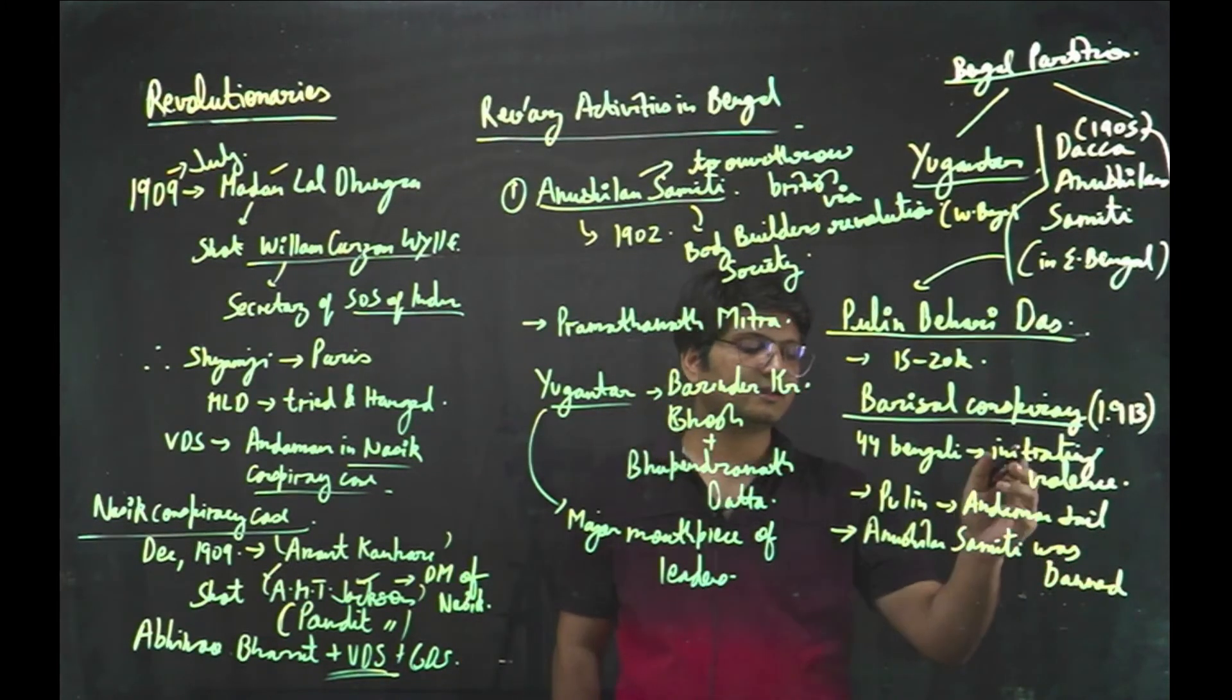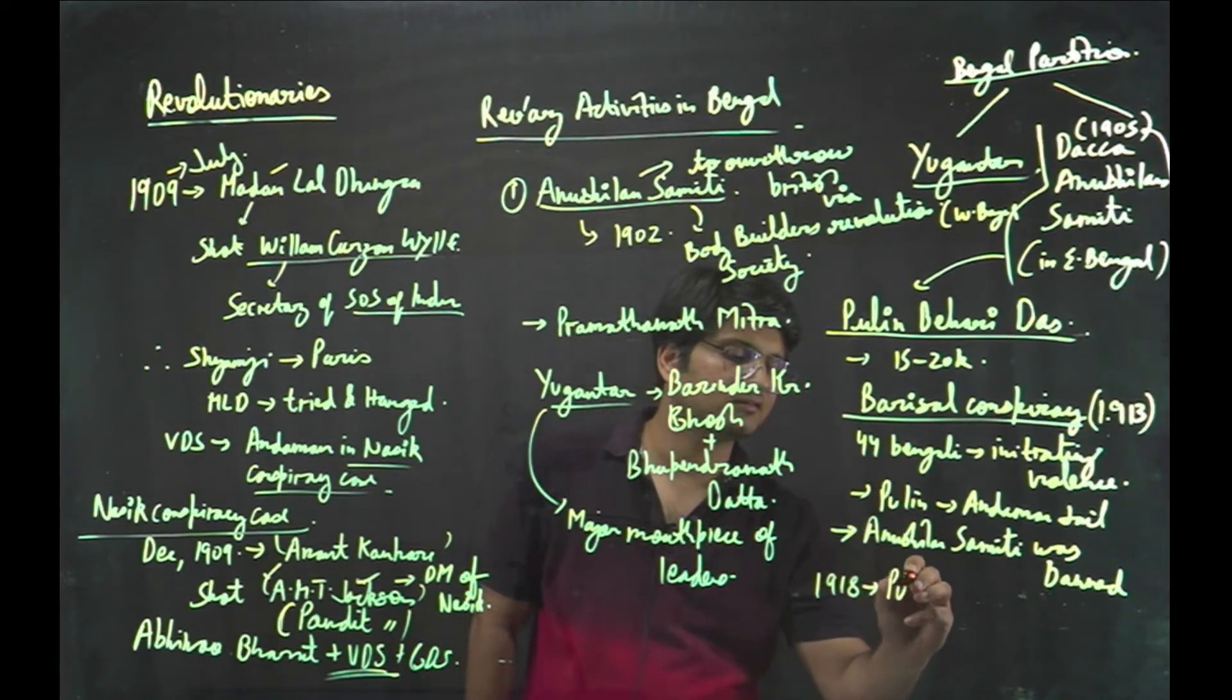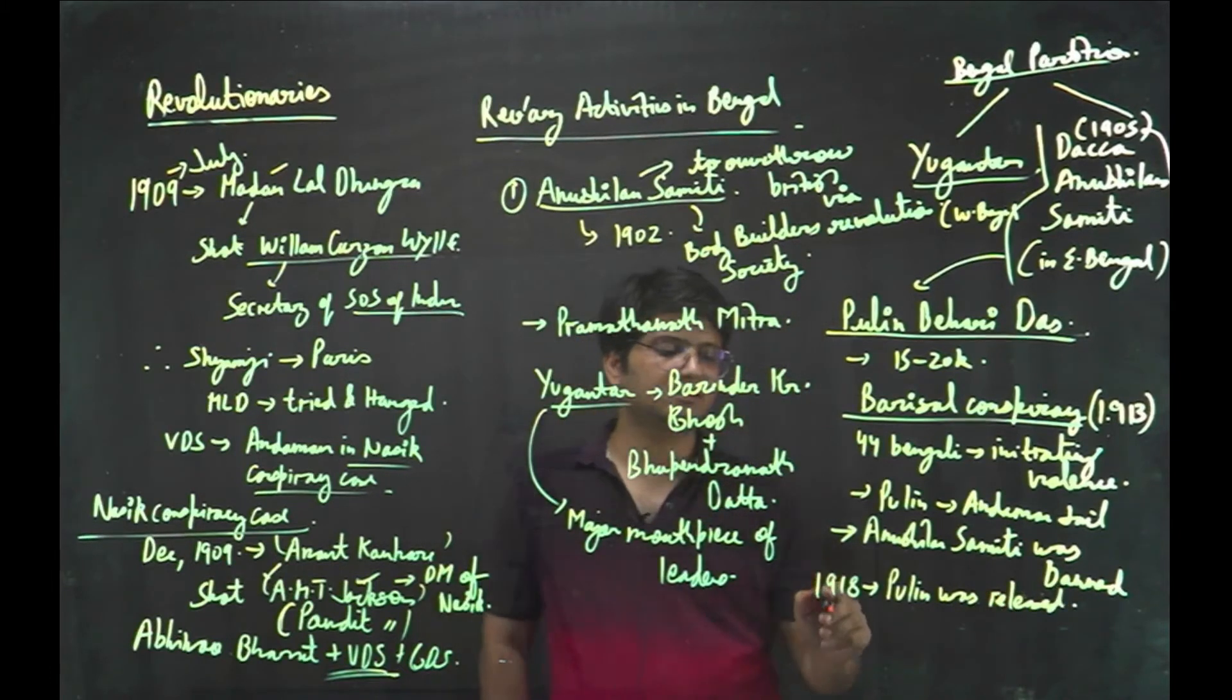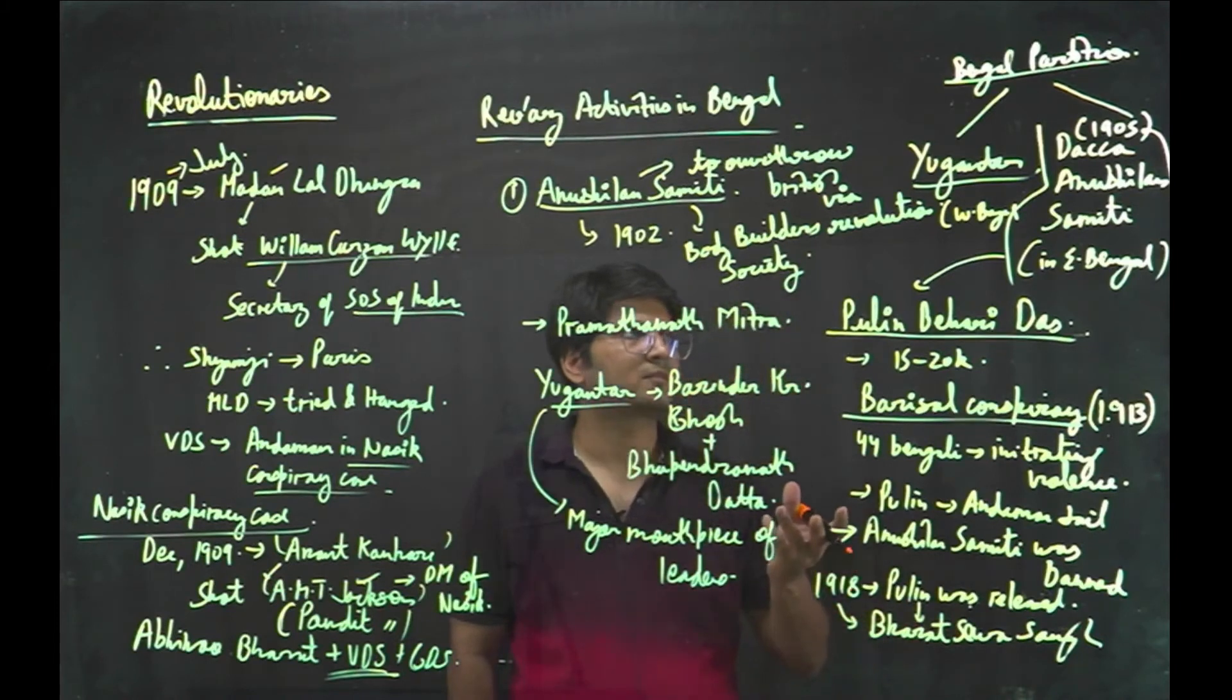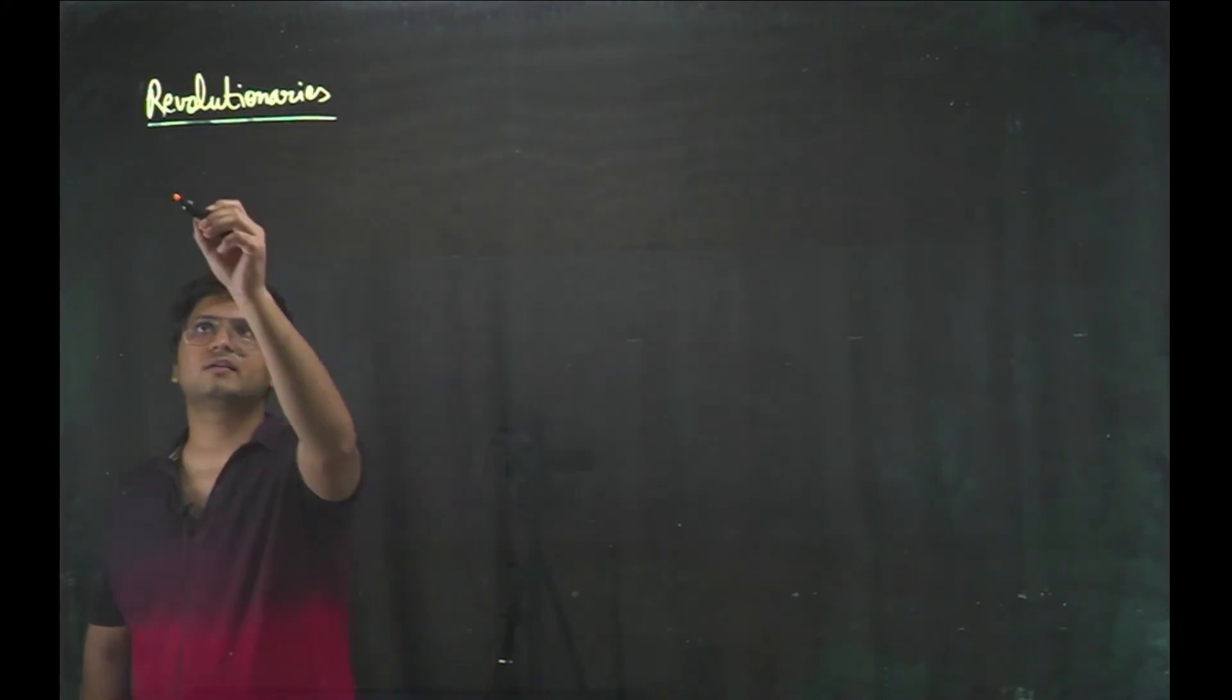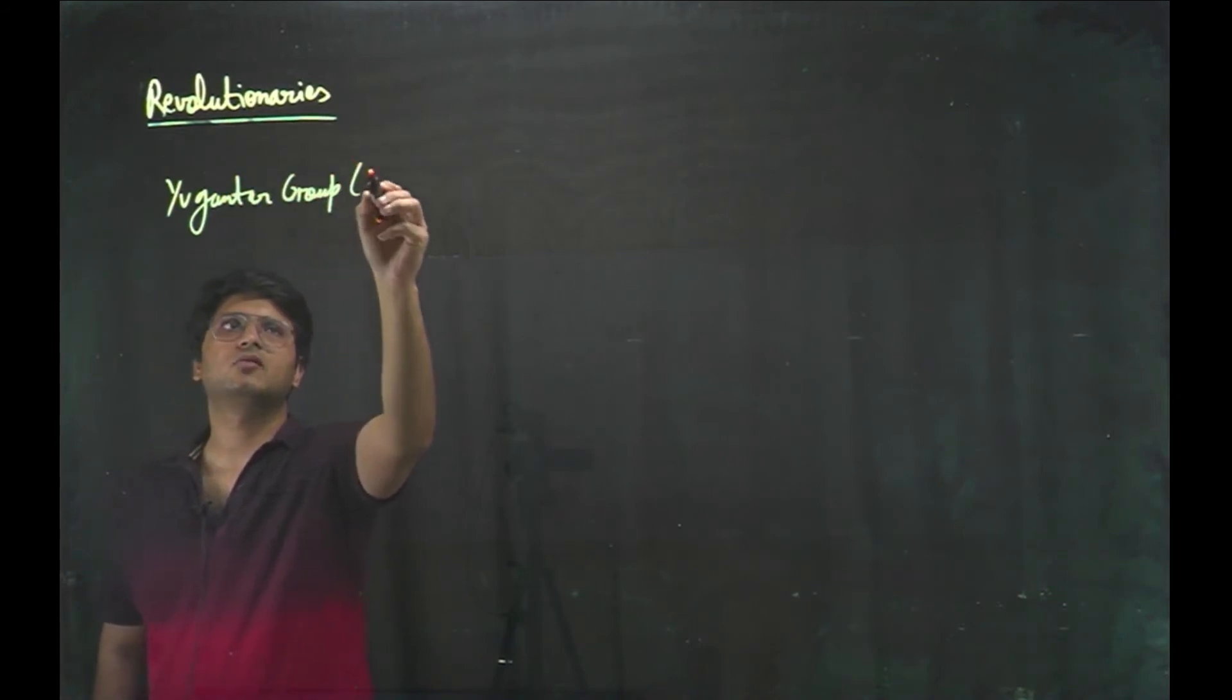And after that, in 1918, Pullin was released from jail. And after that, he does not subscribe to Gandhi's ideology and he founded Bharat Seva Sangha. And the activities of the Dhakka Anushilan Samiti came to halt after Barisal Conspiracy.